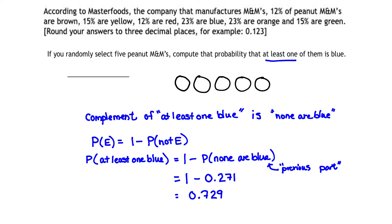If you select five peanut M&Ms, the probability that at least one of them is blue is 0.729, the complement of the probability that all five are not blue.